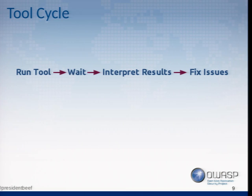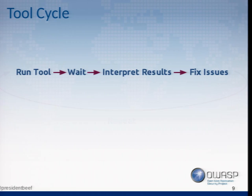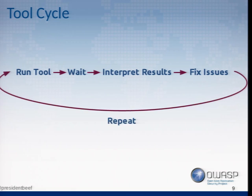This is kind of the tool cycle, probably familiar to a lot of you. You get a tool, you run the tool, you wait for the tool to run — maybe look at pictures of cats on the internet. You get back some results, someone has to interpret them, and then someone has to go and fix the issues. And once you've done that, the code changes all the time, so you have to run the tool again. By the second or third time, you already don't want to do this again. However, computers don't mind at all — they're very good at doing things over and over again.